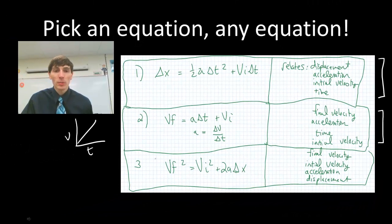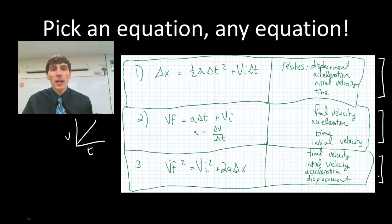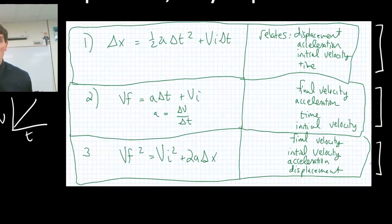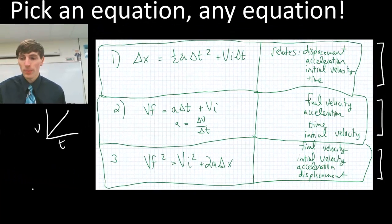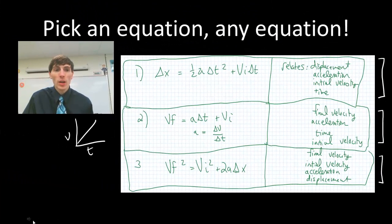The last equation we also derived from the velocity-time graph. This final equation relates final velocity, initial velocity, acceleration, and displacement. So if I have three of these four variables, then I know I can solve for an unknown. Let's go ahead and go through a couple problems together.